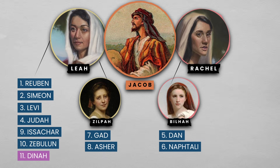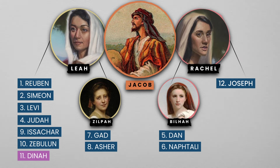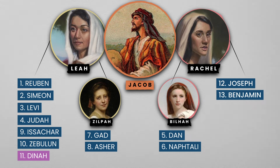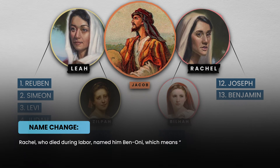Dinah was Jacob's only daughter and her mother was Leah. Joseph was Jacob's 12th child and Rachel's first, as God opened her womb and enabled her to conceive. Benjamin was Jacob's last child. His mother Rachel, who died during labor, named him Ben-Oni, which means son of my trouble. But Jacob renamed him Benjamin, which means son of my right hand.